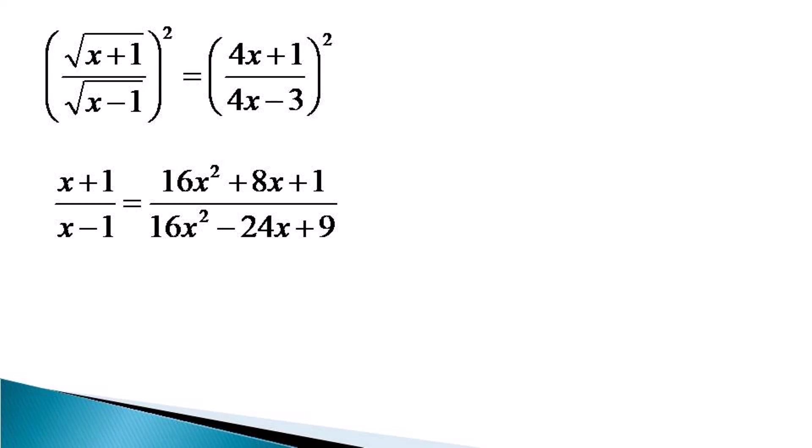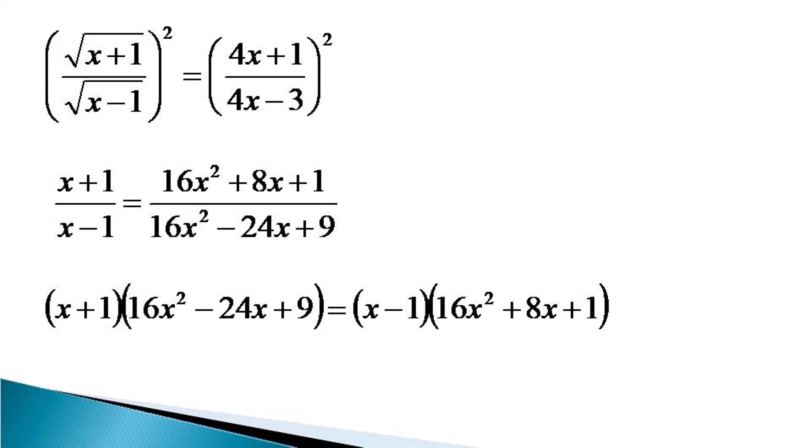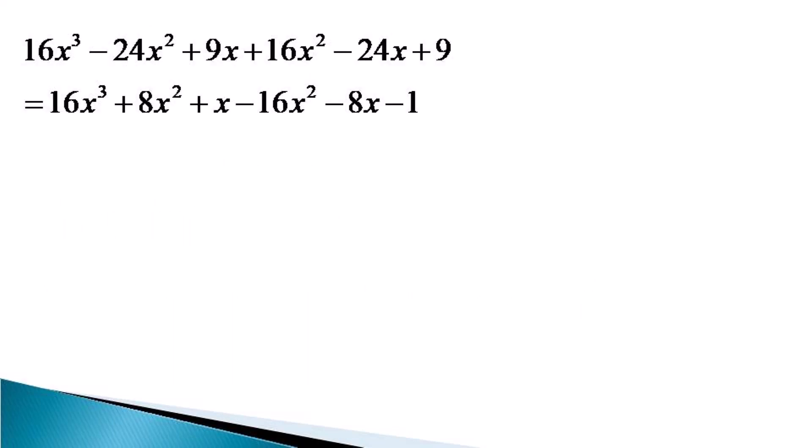This equation can be solved by cross multiplication, giving (x+1) multiplied by the denominator on the right-hand side equal to (x−1) multiplied by the numerator on the right-hand side. Doing the actual multiplication, we get: 16x³ − 24x² + 9x + 16x² − 24x + 9 equals 16x³ + 8x² + x − 16x² − 8x − 1.